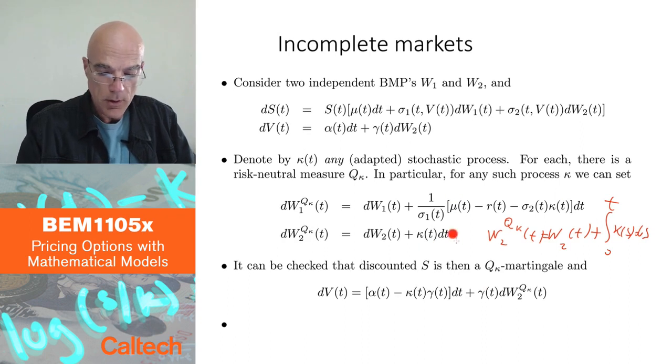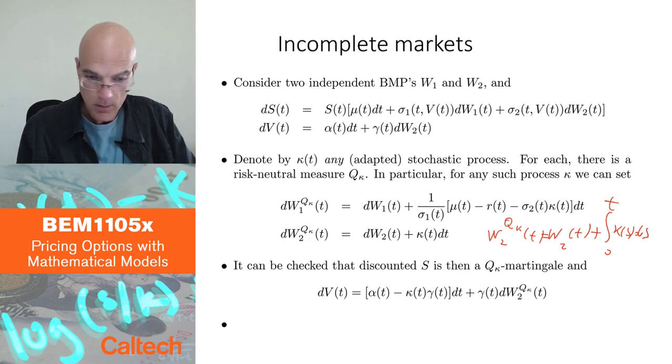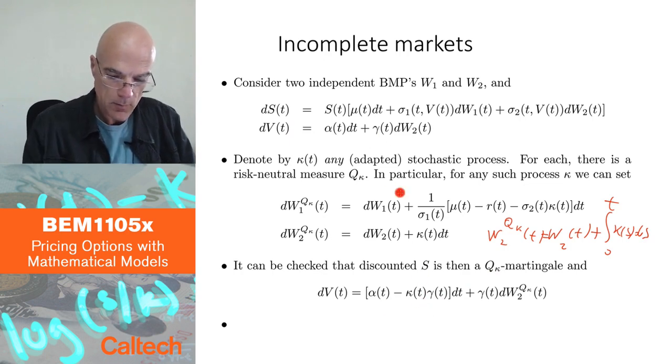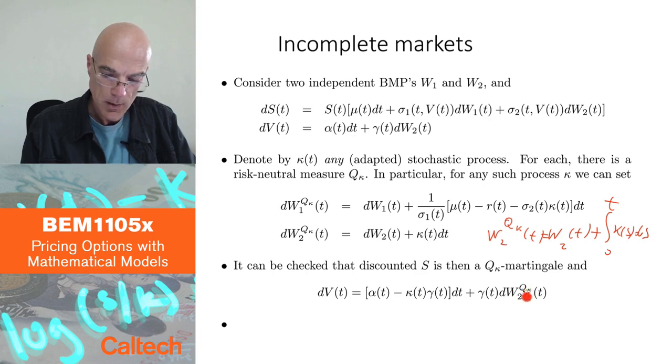So if you do this change, what happens to V? You get alpha minus kappa gamma in the drift. Otherwise, it stays the same. And I change W2 to W2^Q.